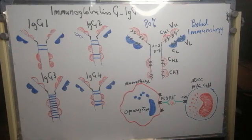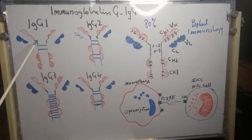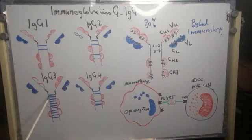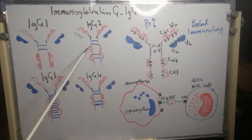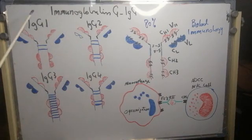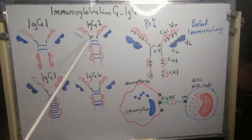On the other hand, IgG1, IgG2, and IgG3 can cross the placenta.